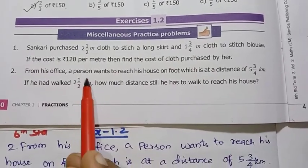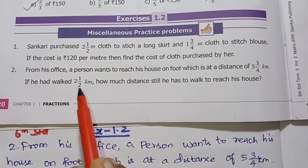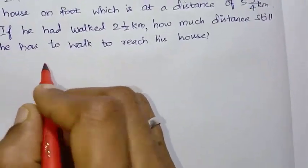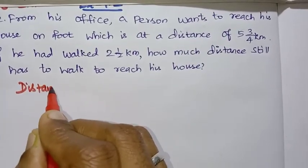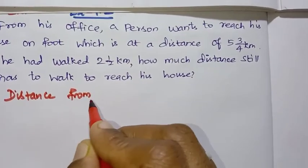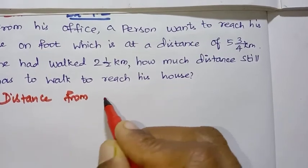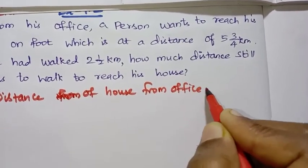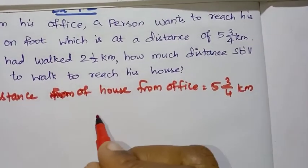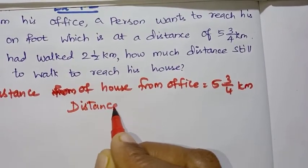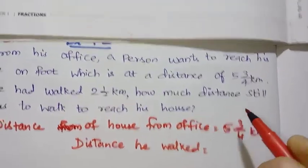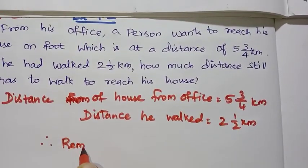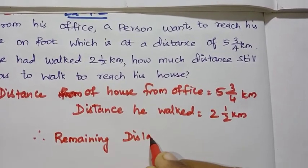We need to find the remaining distance. The distance from house from office is 5 3/4 km, and the distance he walked is 2 1/2 km. Therefore, the remaining distance we have to find out.